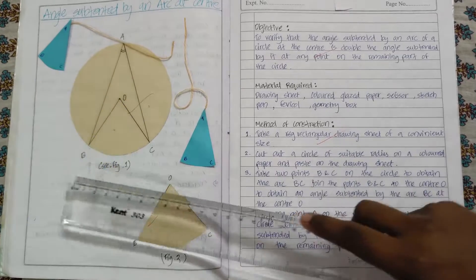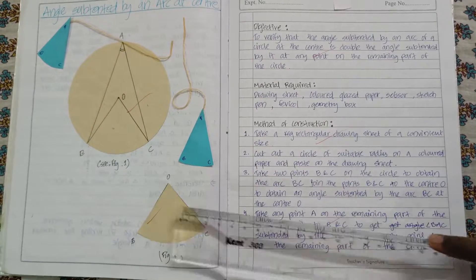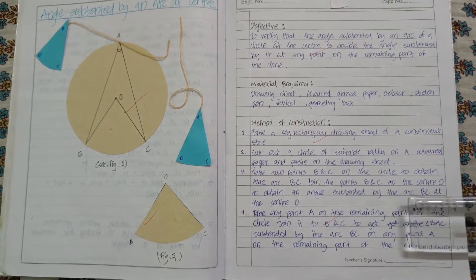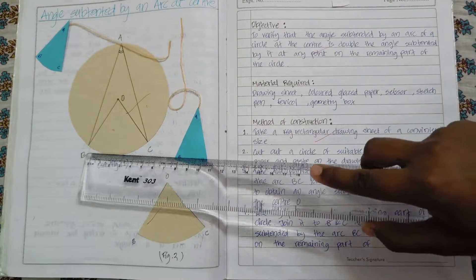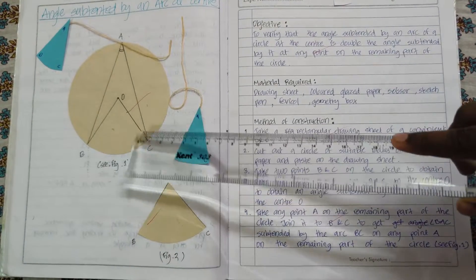Third, take two points B and C and join B and C to the center which is O, so that BO and CO.